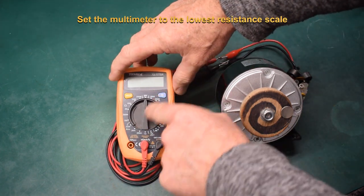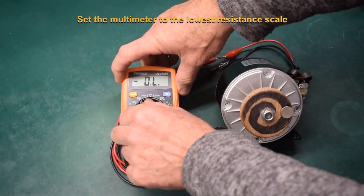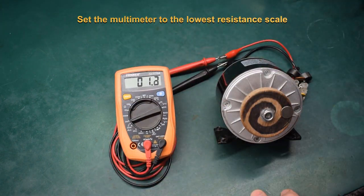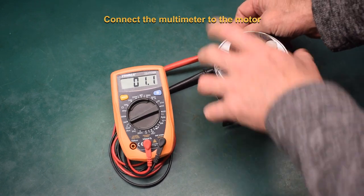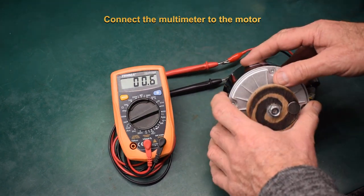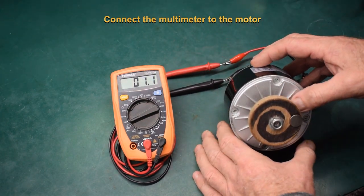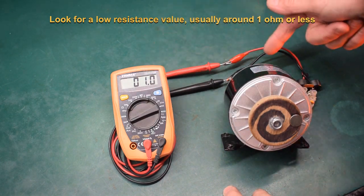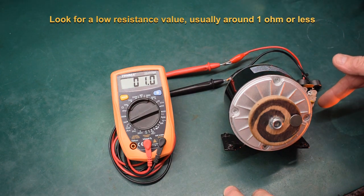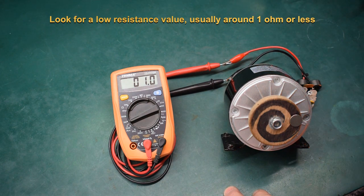We turn the resistance meter to the lowest resistance scale and we've got the meter connected to the brush wires on the motor. Now you can see that the resistance meter is showing about one ohm. That's across one coil of the motor.